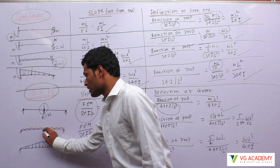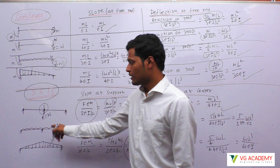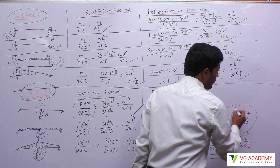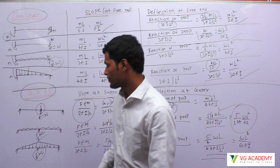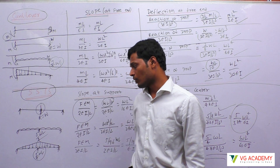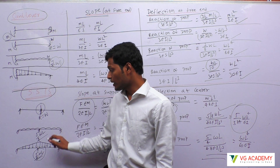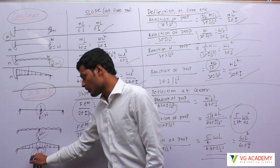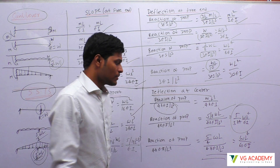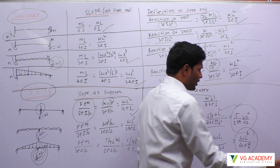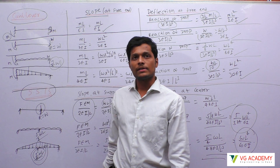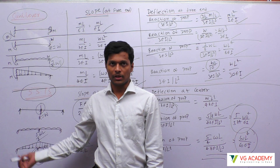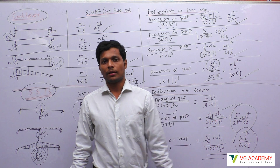For a UDL on a simply supported beam, the reaction at the center prop is the standard case of 5 by 8 WL. Substituting gives 5 by 384 WL to the power 4 by EI. For a triangular load, the reaction is 5 by 4 times WL — double the UDL case, because more load comes toward the center. Substituting 5 by 4 WL gives WL to the power 4 divided by 68EI. So if you can find the reaction at that point, simply divide by 48EI by L cubed.